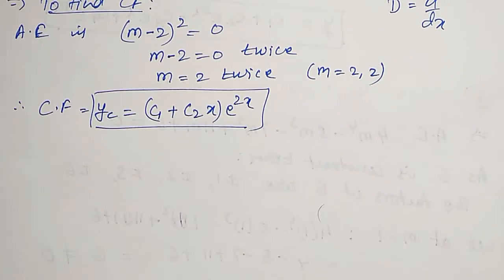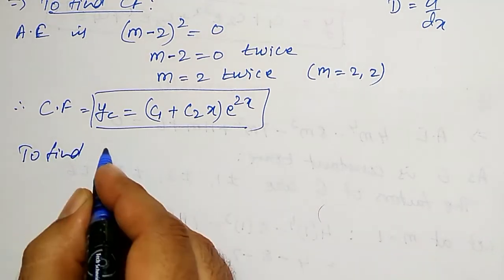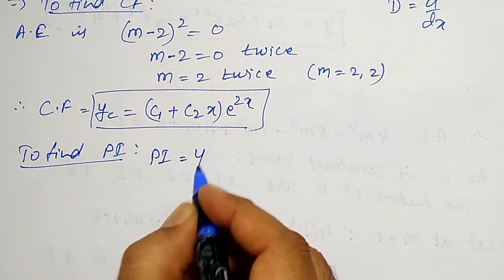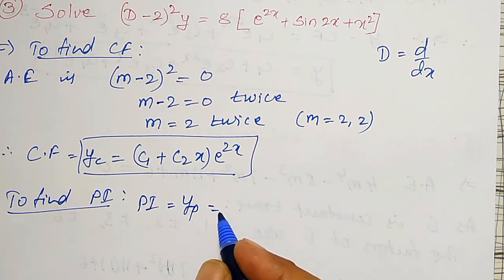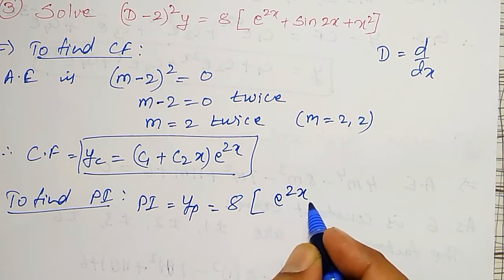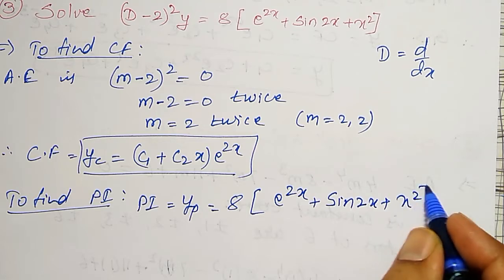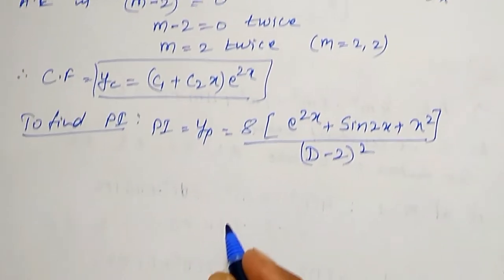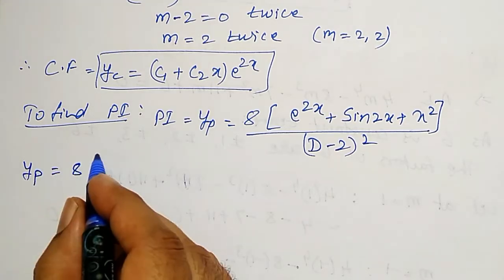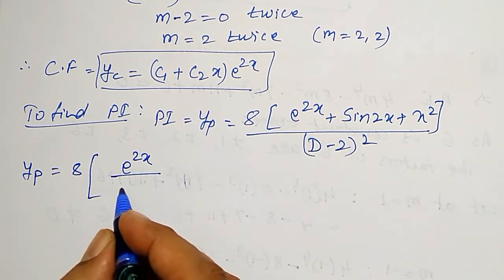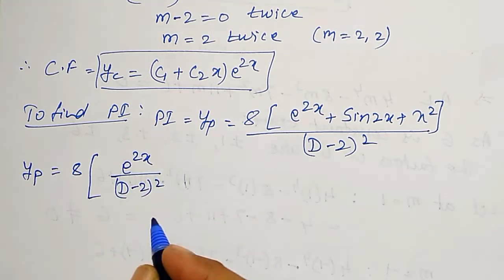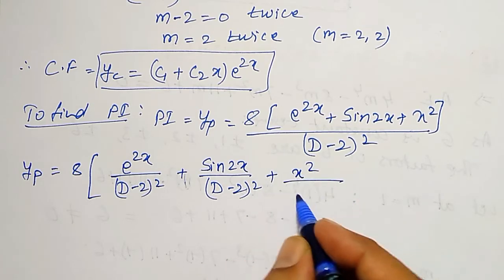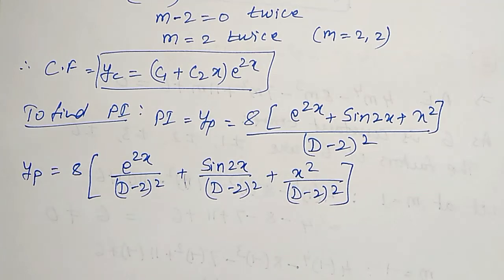Then to find PI — the particular integral — YP equal to: the right hand side, that is 8 times (e to the power 2x plus sin 2x plus x squared), all divided by (D minus 2) the whole square. Solving this together will become a tedious process, so I will call it as 8 times (PI1 plus PI2 plus PI3), all separately calculated and substituted.